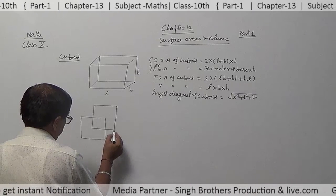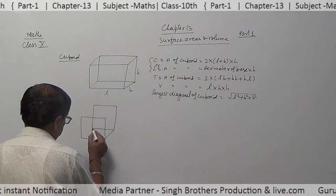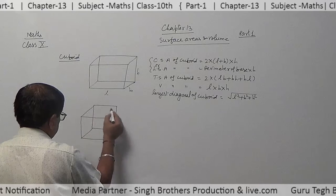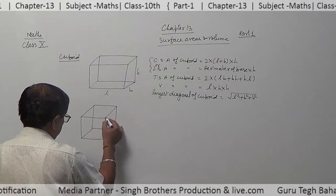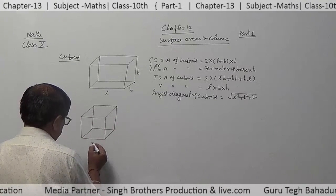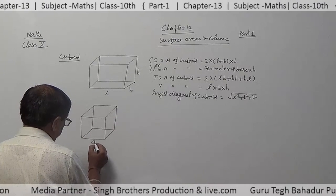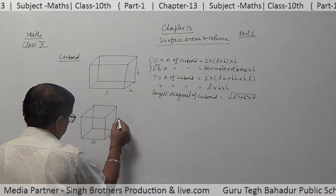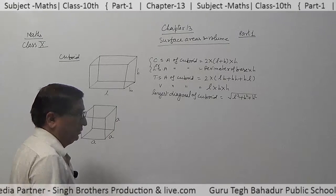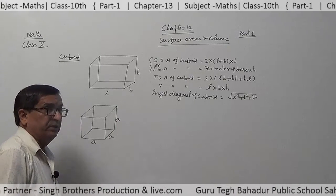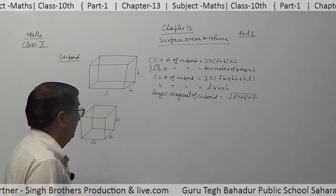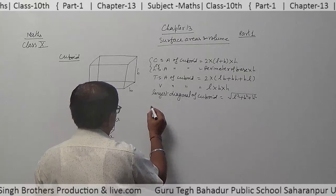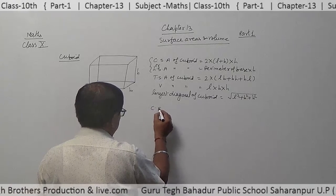Now, this is a cube. This is side A. Length is A, breadth is A, and height is also A.